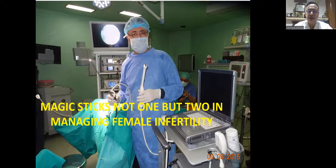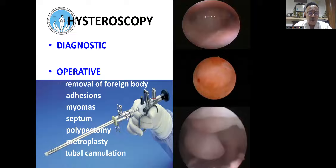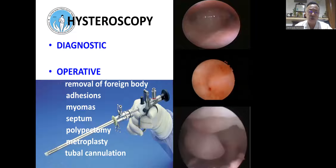Hysteroscopy is a magic stick, but it's not the only one a gynecologist needs. We need two magic sticks — the ultrasound and the hysteroscope. With these two, we can make the diagnosis and go ahead with treatment, especially in infertility and when looking at uterine factors, which account for about 10% to 15%.